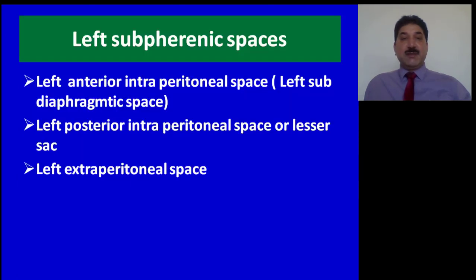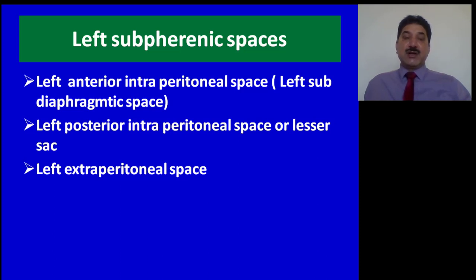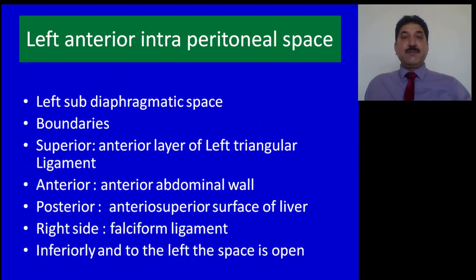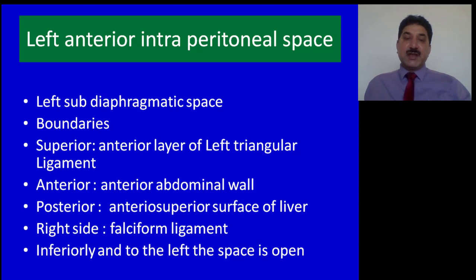Left subphrenic spaces: the left anterior intraperitoneal space is also called the left subdiaphragmatic space. The left posterior intraperitoneal space is also called the lesser sac. There is a third space called the left extraperitoneal space. The boundaries of the left subdiaphragmatic space are: superiorly, the anterior layer of the left triangular ligament; anteriorly, the anterior abdominal wall; posteriorly, the anterior superior surface of the liver; on the right side, the falciform ligament which separates it from the right anterior subdiaphragmatic space; and inferiorly and to the left, the space is open.